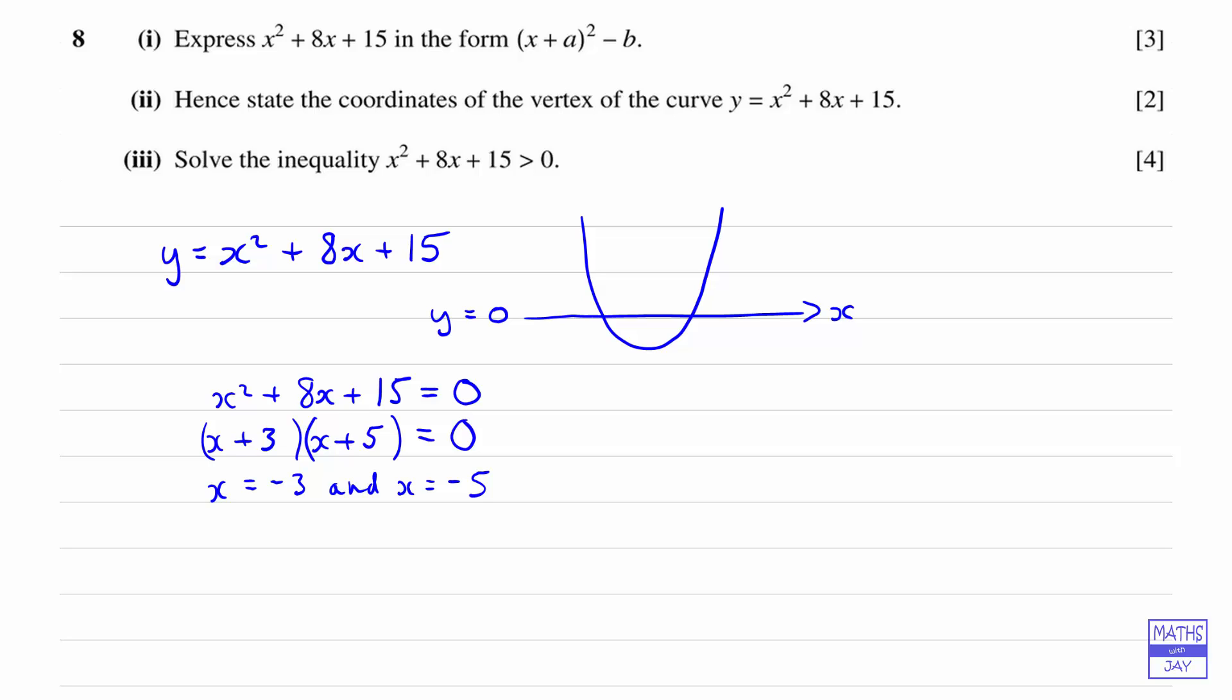Remember, all we're doing here is finding the points where the parabola cuts the x-axis. So what we've actually done is found that we've got minus 5 here and minus 3 here. But having done that, we can now solve the inequality because we can now see that the parabola is above the x-axis when x is less than minus 5 or when x is greater than negative 3.